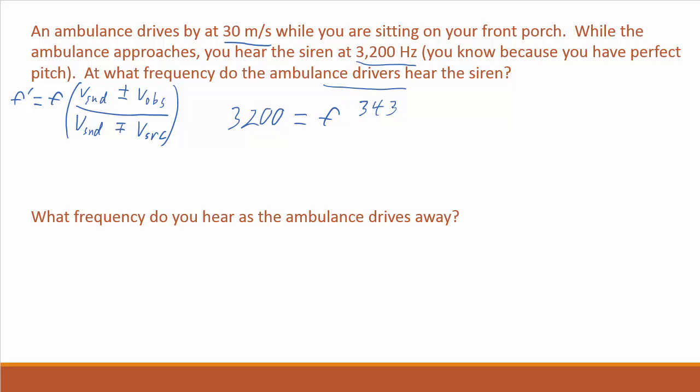When it's moving toward you, we're going to use the top sign, so that's plus here, and then we're going to have 343 minus on the bottom. And we want the velocity of the observer, again think about relative to the air, so you sitting on your front porch have a velocity of zero. The ambulance has a velocity of 30, so we plug that in,